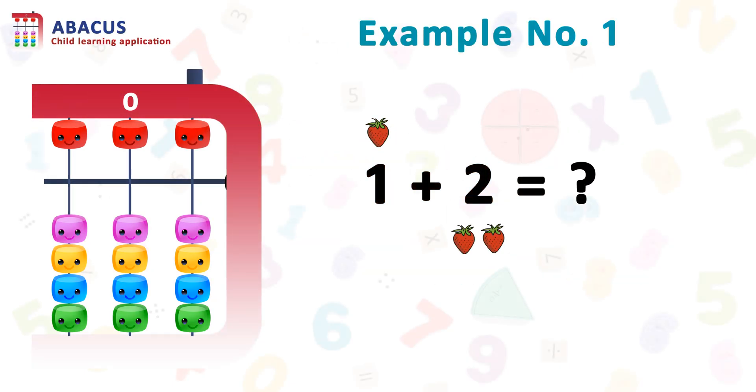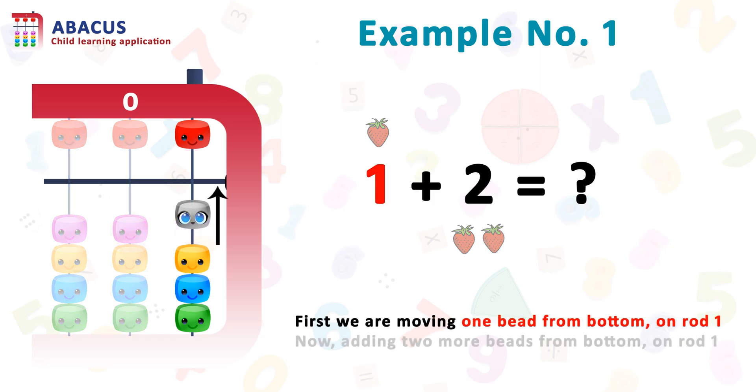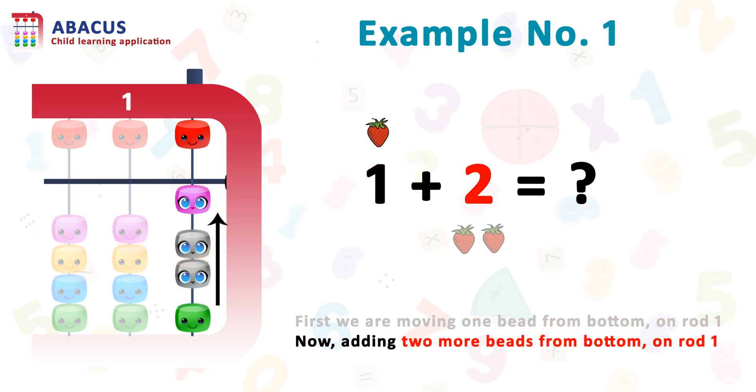Here we have example number one: one adding two strawberries. So first let's set one - for one, removing one bead from bottom to top on rod one. Now we have to add two. For two, adding two more beads from bottom to top on rod one.